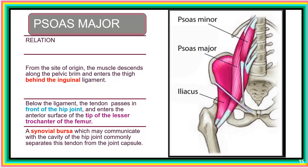Looking at the relations of psoas major, from the site of origin the muscle descends to the pelvic brim. From the pelvic brim it enters the thigh, passing deep to the inguinal ligament. Here is the inguinal ligament, and we see the psoas major running deep to it.